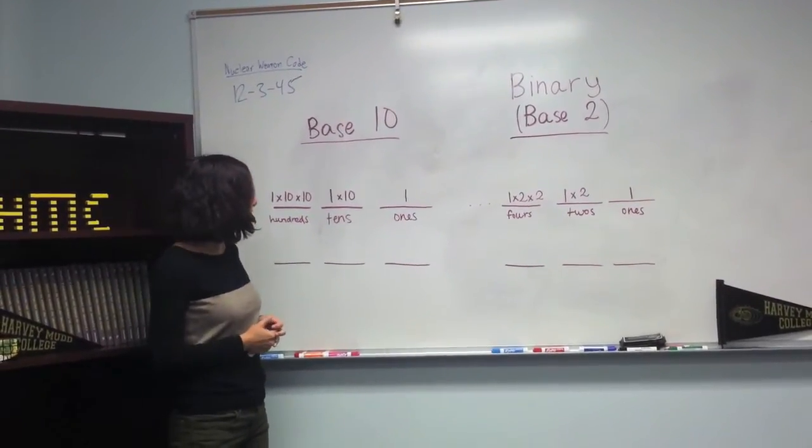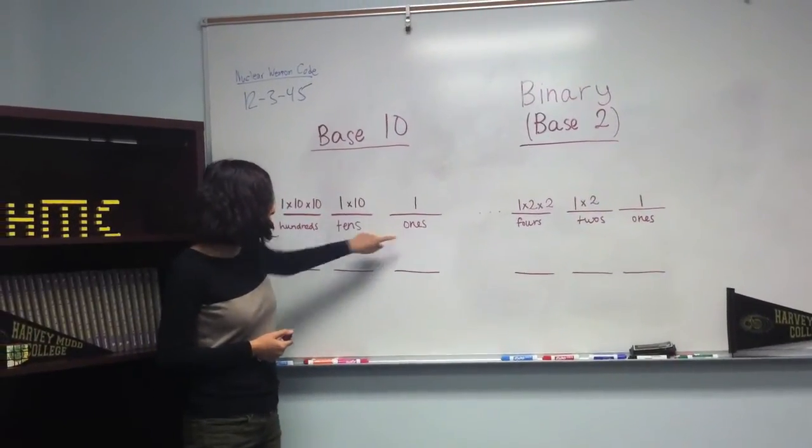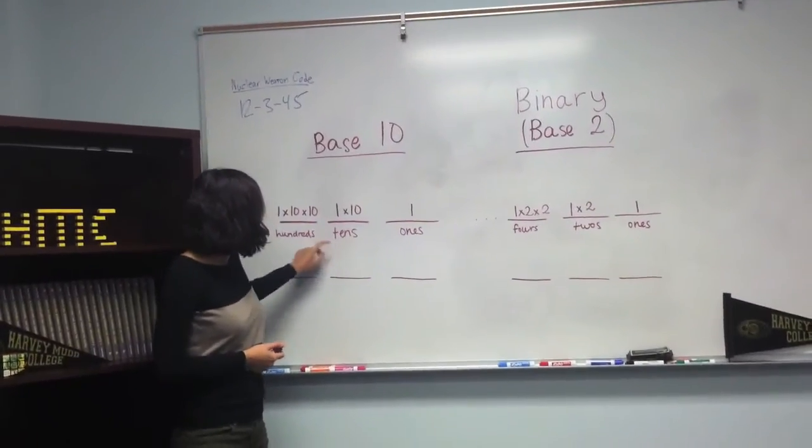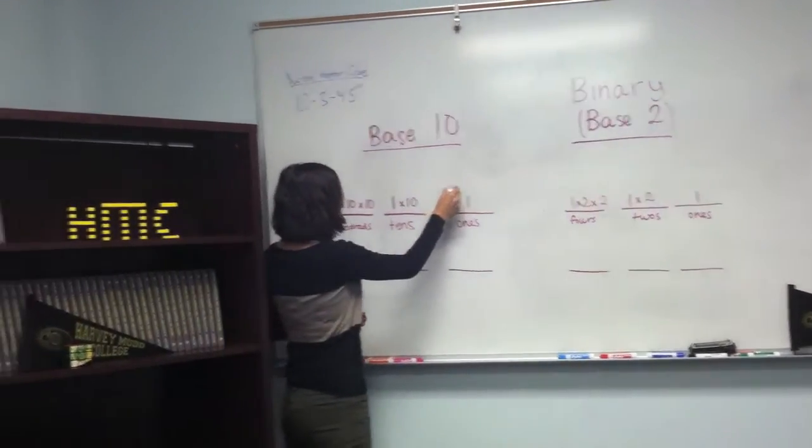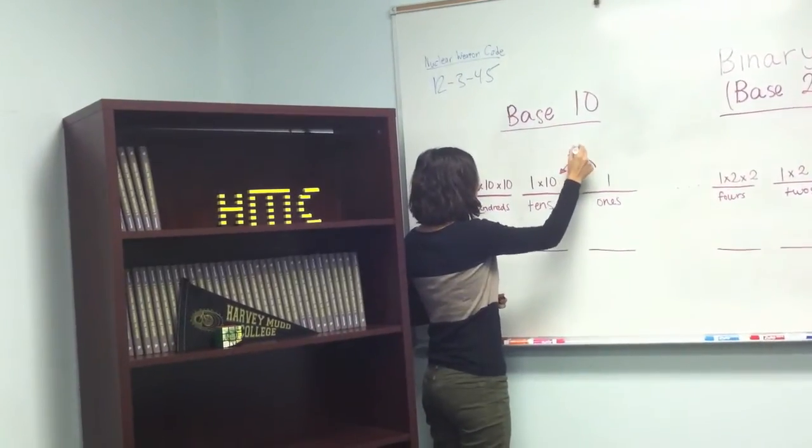So in base 10, you have the ones placeholder, the tens placeholder, and the hundreds placeholder. So every time you move forward, you multiply by 10.